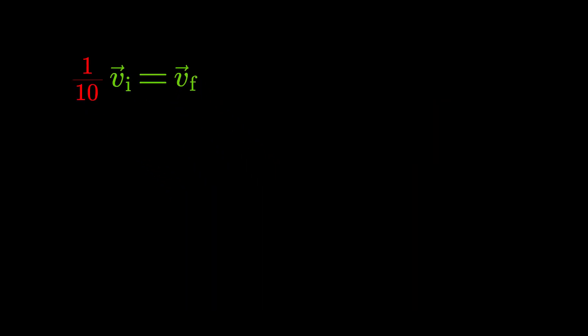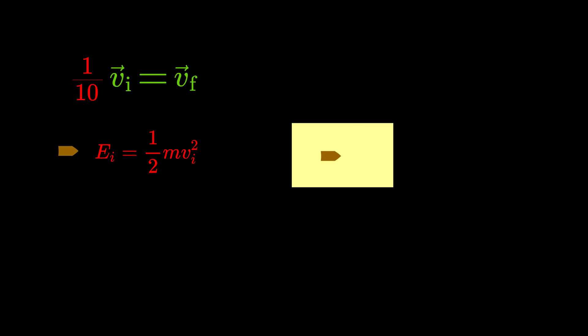We can easily check if this is true by just calculating the kinetic energy of the projectile and the whole object after the impact separately. The initial energy is the kinetic energy of the projectile and the final energy is the kinetic energy of the whole object moving with the velocity Vf.